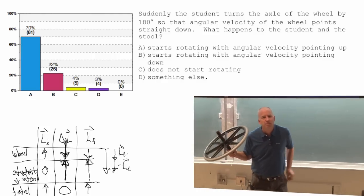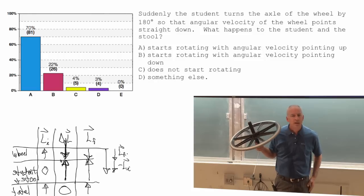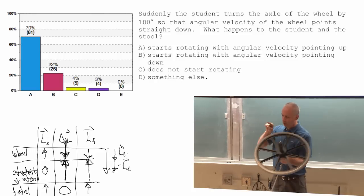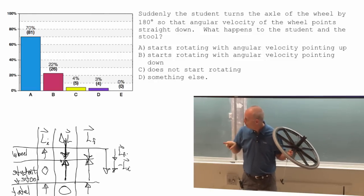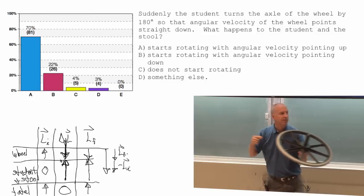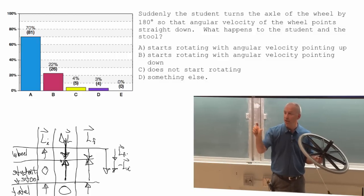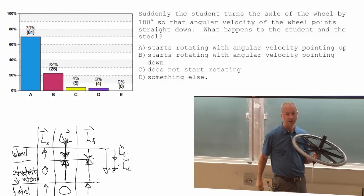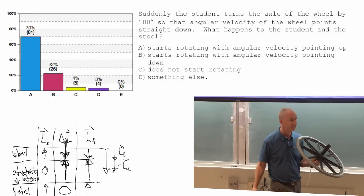You've seen things like that in terms of momentum, I think. Where if an object bounces off of something, so it changes its momentum, then the change in momentum is bigger than either of the initial or final momentum.